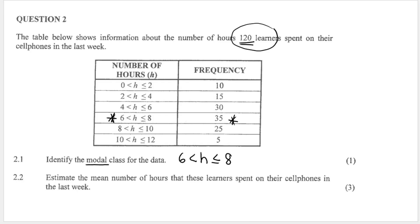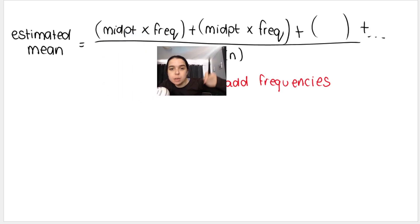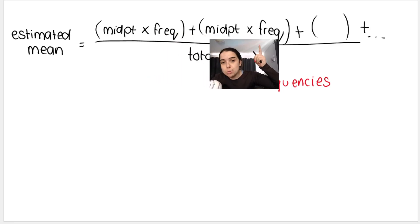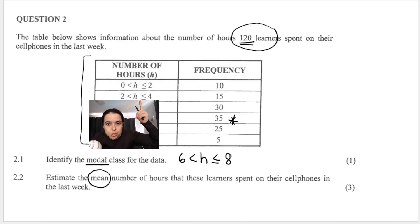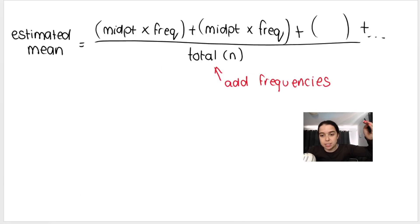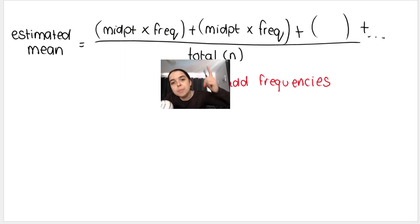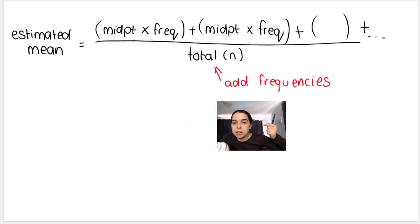The next question asks us to estimate the mean number of hours learners spent on their cell phones. Mean is average. With grouped data, we work out the estimated mean as follows: we take the midpoint of the first interval multiplied by its frequency, plus the midpoint of the second interval times its frequency, and so on. We do this for all six intervals, giving us six brackets in the numerator, divided by the total n, which is the sum of all frequencies.